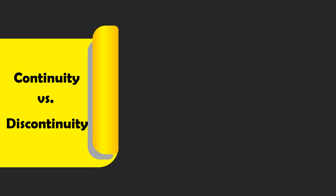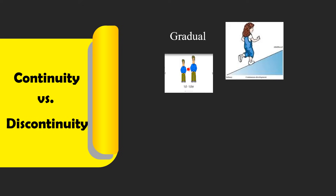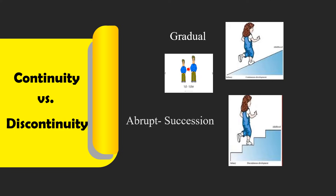The continuity view says that change is gradual. Children become more skillful in thinking, talking, or acting much the same way as they get taller. The discontinuity view sees development as more abrupt — a succession of changes that produce different behaviors in different age-specific life periods, called stages.